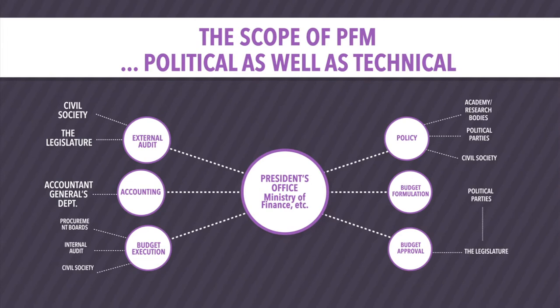Linked to budget execution is the whole process of accounting and monitoring. The next phase is auditing and evaluation: after the budget is finished, auditing examines whether procedures were properly followed and results achieved, while evaluation asks whether the right policies were pursued — whether better results could have been achieved with a different policy. That feeds back into the policy development process.